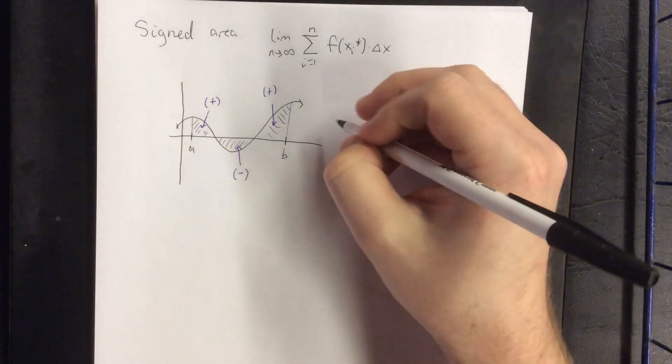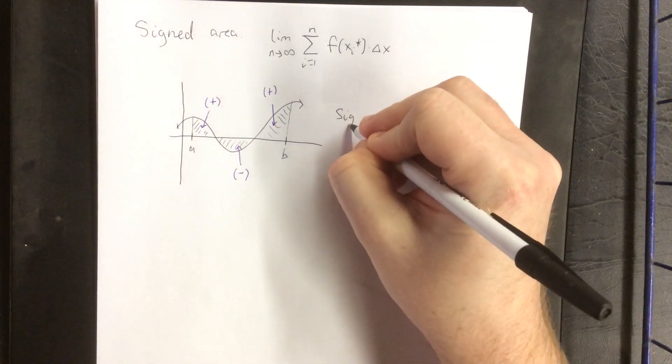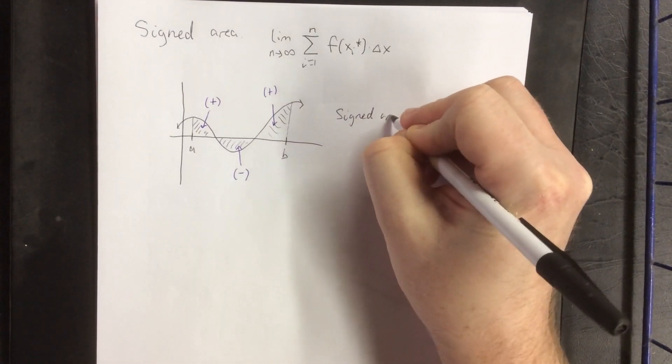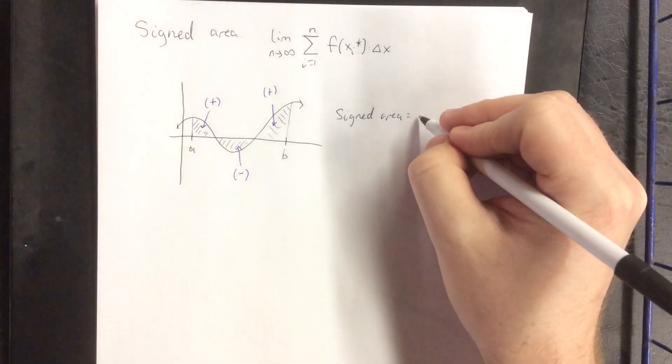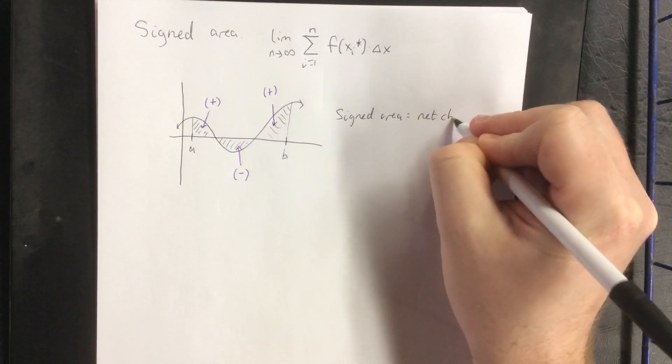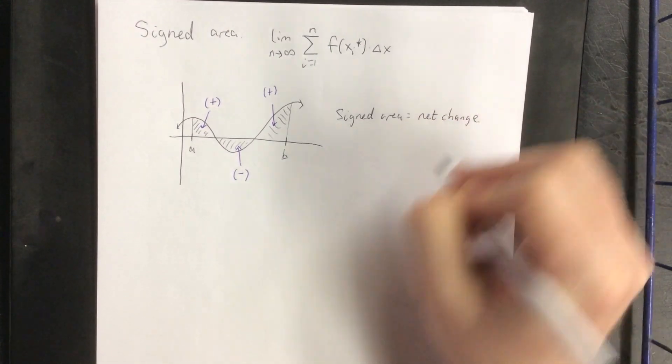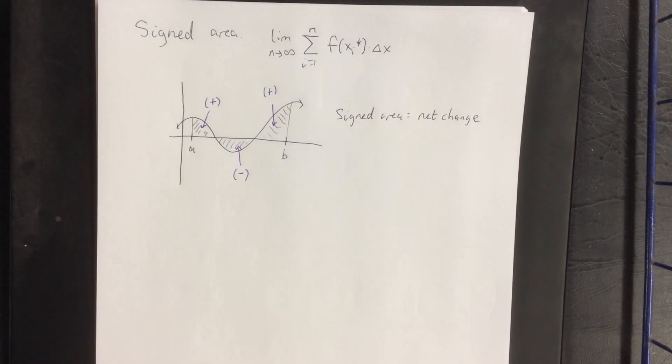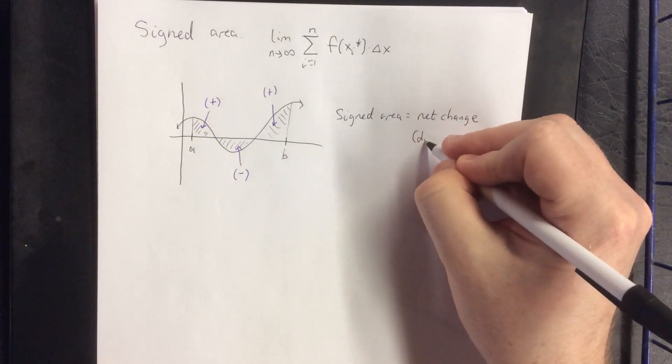So overall, the signed area would be the net change, the net change referring to the net change, for example, in position. That might be a concept like displacement.